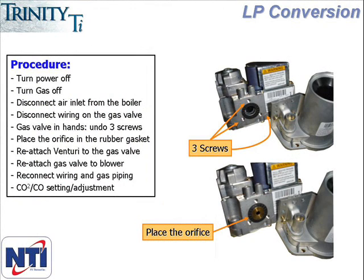If you are converting a boiler to LP for a new installation, it's best to do it before it's been hung on the wall. The three screws that need to be removed are located on the bottom of the gas valve, so it's a little easier to get at them before it goes on the wall. When converting a unit that's already been installed, make sure the power and gas are turned off and disconnect the air inlet from the boiler.